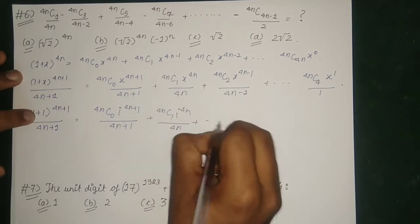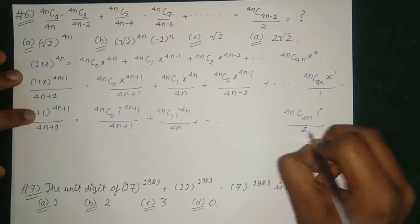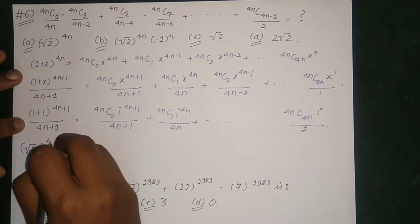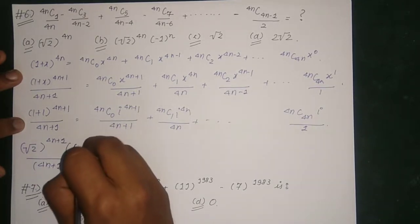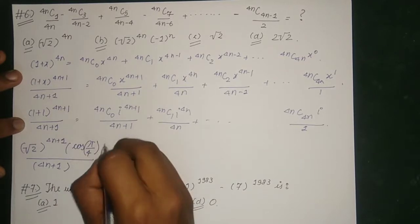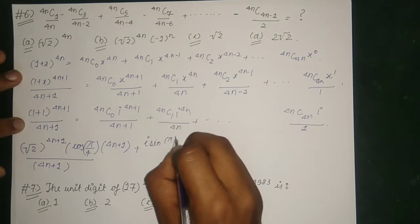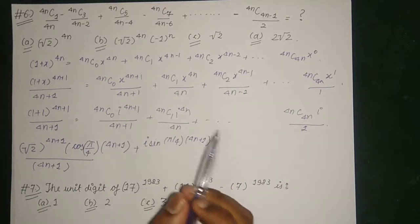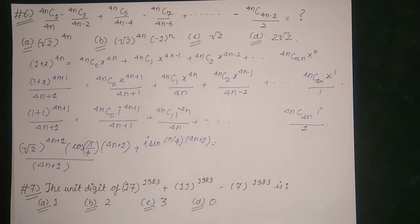Putting x equal to iota, the left-hand side becomes: 1 plus iota to the power 4n plus 1, upon 4n plus 1, and this can be generalized as root 2 to the power 4n plus 1, multiplied by cos of (pi/4)(4n plus 1) plus iota times sin of (pi/4)(4n plus 1). Also, iota to the power 4n plus 1 simplifies to iota, i to the power 4n equals 1, and i to the power 4n minus 1 equals minus iota.